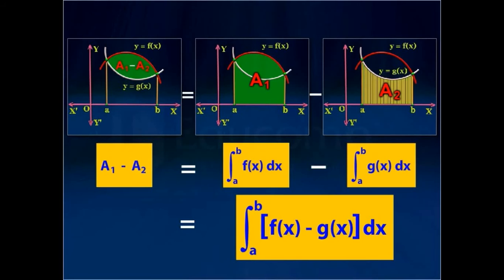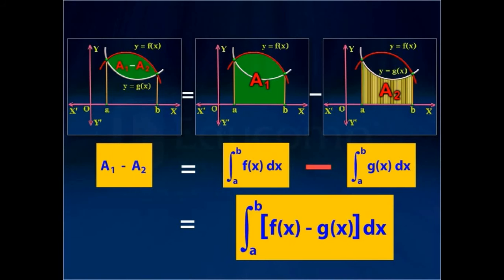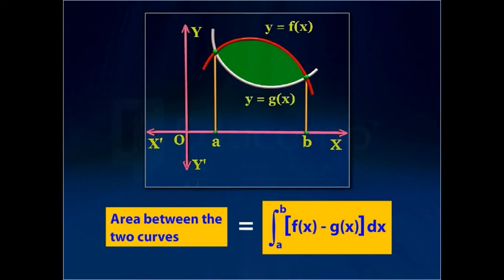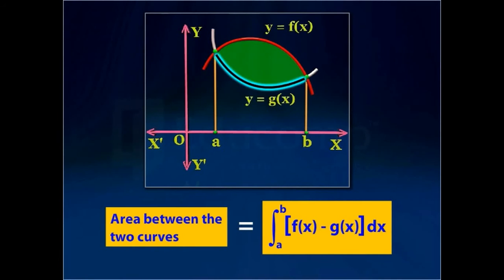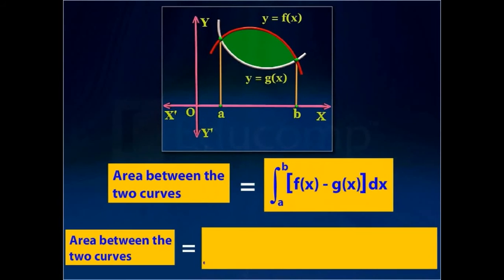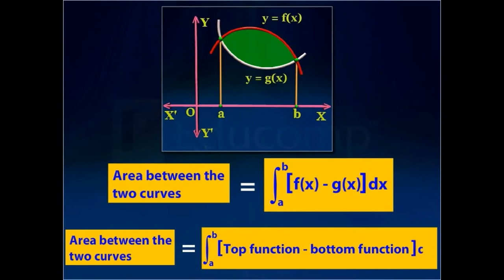This is because the property of a definite integral states that the integral of a difference of two functions is equal to the difference of the integrals of each function. This is the formula to find the area enclosed between two curves when one curve is below the other. We can also remember it as a definite integral from a to b of the top function minus the bottom function, whole into dx.